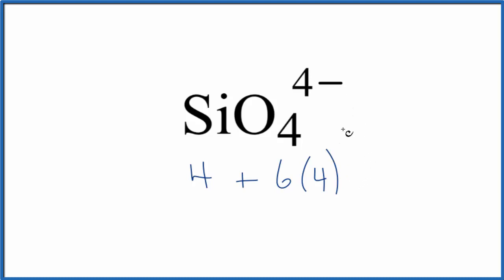And then this four minus, that's the ionic charge on this SiO4 anion. So we need to add an additional four electrons. When we do that, we get 32 total valence electrons for the SiO4 four minus Lewis structure.